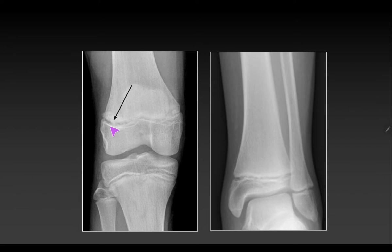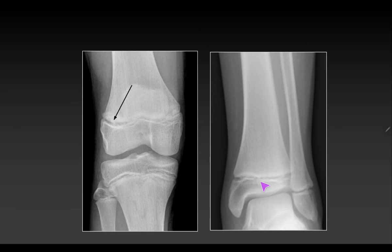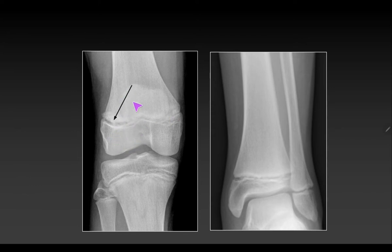On x-rays you may see translucent lines running across the bones that might be mistaken for fractures. These are actually the epiphyseal plates, appearing translucent due to the presence of cartilage. Once the epiphysis fuses with the shaft, this line disappears. It is important to differentiate epiphyseal lines from fractures, and any fracture along the epiphyseal plate can lead to distorted development of that bone.